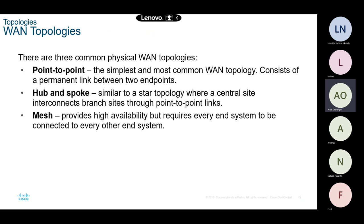Within the wide area network we have some topologies we'll cover more in the final module. For now we'll look at point-to-point. For example, a router in Kisumu and another router in Nairobi connected mostly via fiber optic cable — that simple connection is called a point-to-point topology.